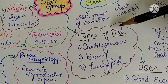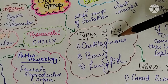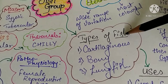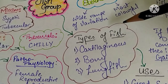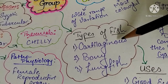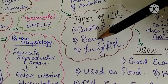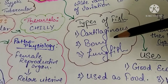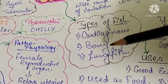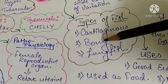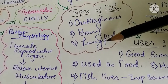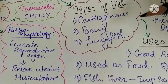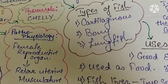There are various types of fish. First is cartilaginous fish, in which a cartilaginous substance is present — a very tough and thorny kind of substance. Then bony fish, which have one single bone present inside them. And lung fish, in which both lungs as well as gills are present.